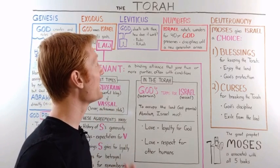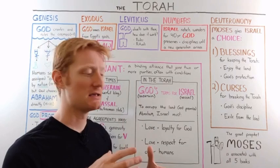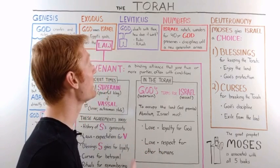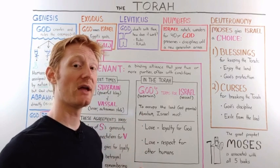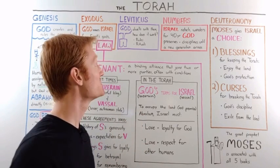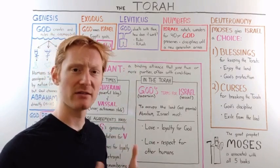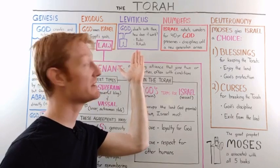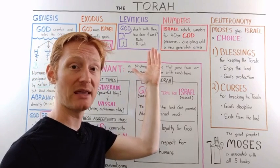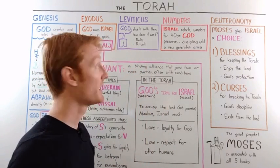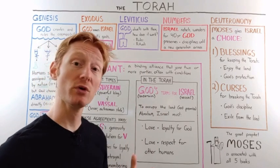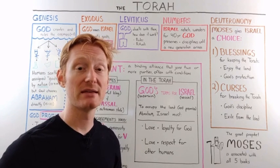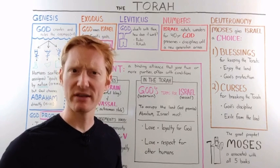In Leviticus, God comes to dwell among the people. His presence is manifesting like a fiery cloud, and he moves in with this nation of mortals to inhabit a portable temple called a tabernacle — essentially a very special tent. Israel needs to figure out how to deal with such a powerful being living among them, and that's what the book of Leviticus explores. There are different rules and rituals that the ancient Israelites believed would make it possible for them to coexist in the presence of such a mighty being.